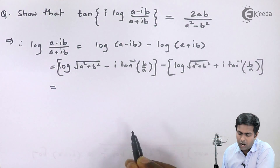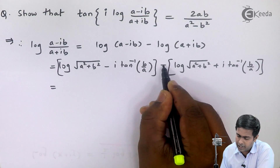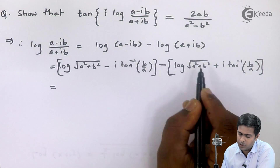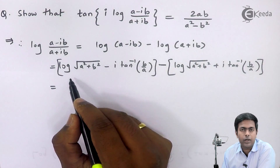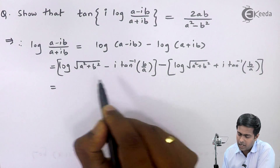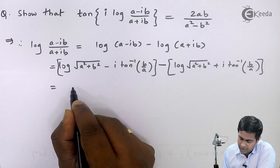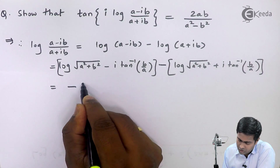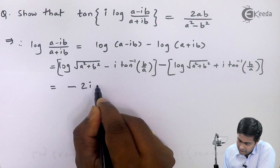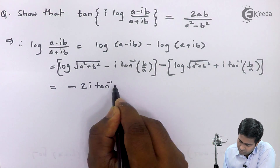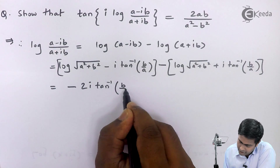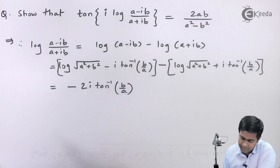After subtracting these two values, the log terms cancel and we get −2i·tan⁻¹(b/a).